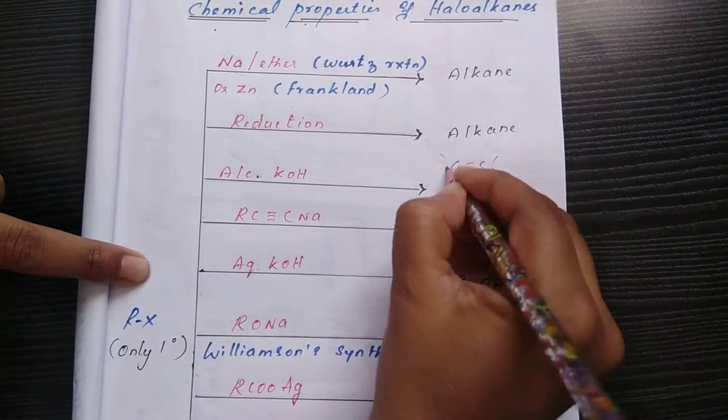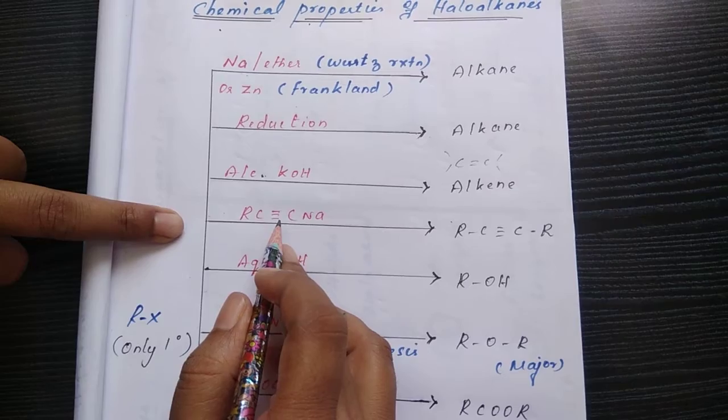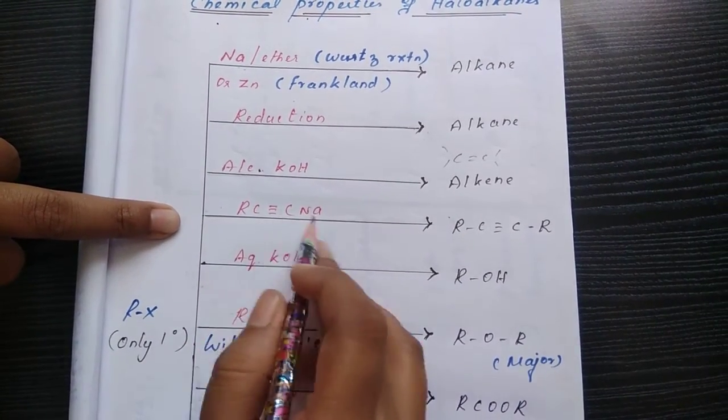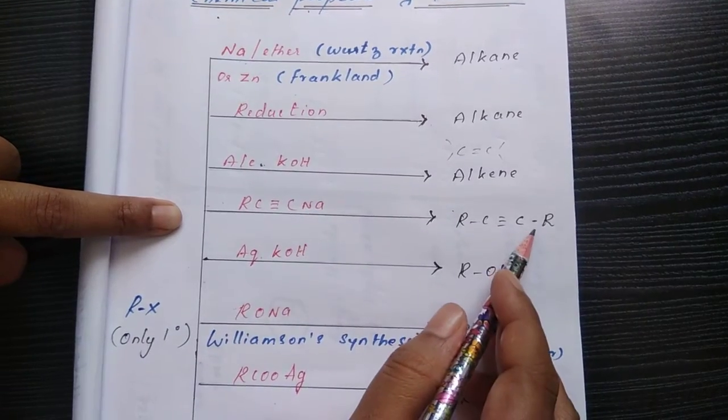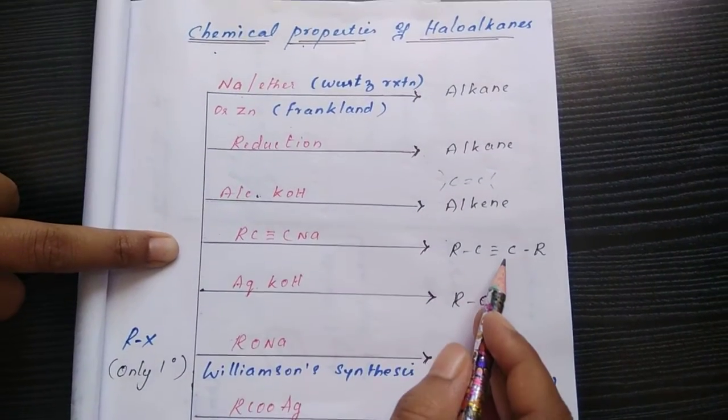Then if you use sodium alkanide, we get a higher number of alkynes. Here the sodium is replaced by alkyl group, so we get higher number of alkynes.